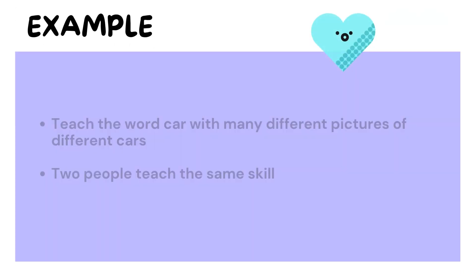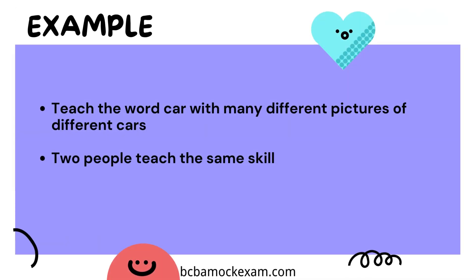To illustrate, let's consider the scenario of teaching the word 'car' using various pictures of different cars. Two people, Alex and Taylor, are teaching the same skill to different groups of learners. Alex shows pictures of different types of cars, from sedans to trucks, and associates the word 'car' with each image. As the learners become familiar with the concept, they start recognizing various cars outside the learning environment and correctly label them as 'car.' In this case, stimulus generalization occurs as the learners generalize the concept of 'car' to various real-world car examples.